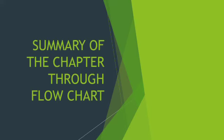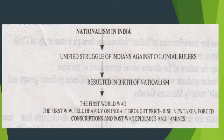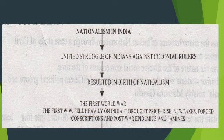Summary of the chapter through flowchart. Nationalism in India — nationalism means spirit of love for nation. In 1857 we have seen that there were princely states or kingdoms and local loyalties were there among the people. Nationalism in India developed as people started a unified struggle against colonial rulers.